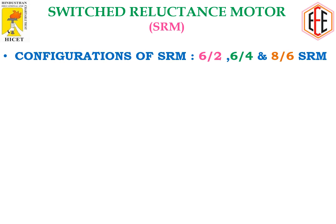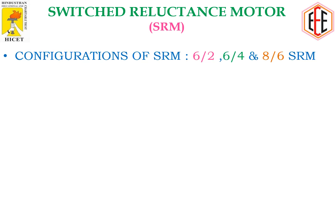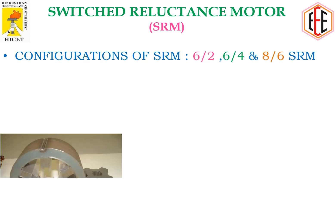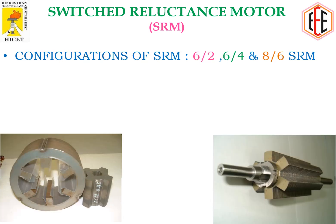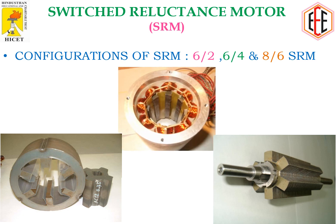The different configurations of the SRM are 6×2, 6×4, and 8×6. As already mentioned, 6×2 means 6 stator teeth and 2 rotor teeth. You can see these configurations in the diagrams.